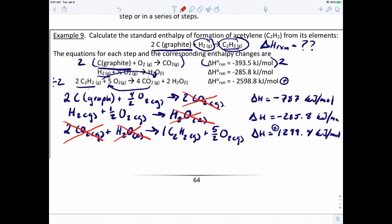What about the oxygens? You've got four halves of O2 plus one half, which is five halves on the left, and then you've got five halves on the right. So the oxygens all drop out.